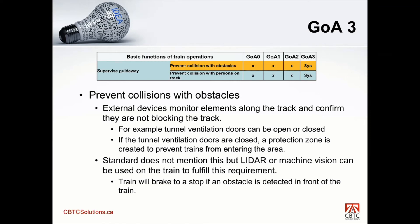The standard does not mention this, but there's more and more work being done on lidar or machine vision, which can be installed on the train to also fulfill this requirement. The train is moving along and, based on lidar or machine vision, it's able to determine that there is an obstacle in front and may stop on its own. That system has not been implemented as far as my knowledge is concerned yet, but there are suppliers looking into this capability. Machine vision introduces more autonomous trains, and it would also satisfy this particular function in GOA 3.